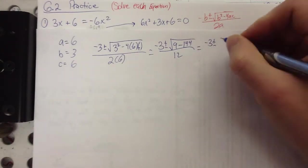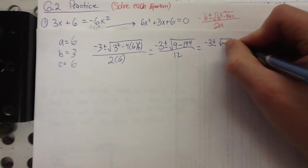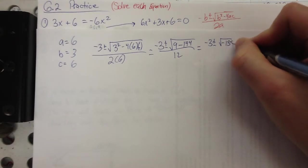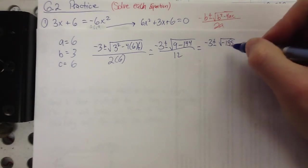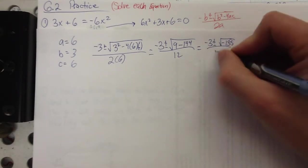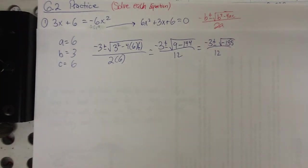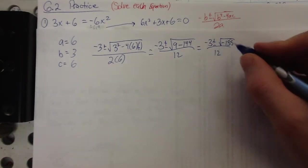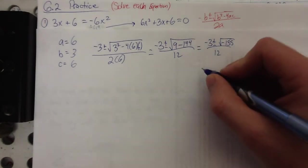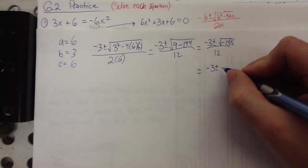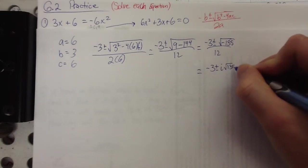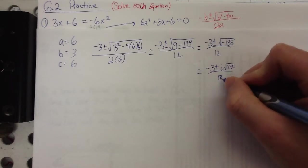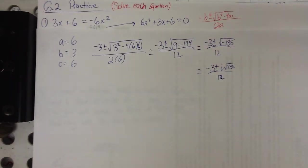So, negative 3, plus or minus the square root, negative 135. Double check real quick, add 9 to that, it's 144, that works. Alright, well, we're kind of sort of almost done. A couple things we need to look out here. We've got a negative under the radical, that's going to have to come out. So, negative 3, plus or minus i, square root 135, all over 12. That i has to come out no matter what.